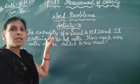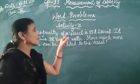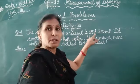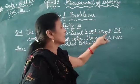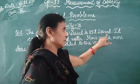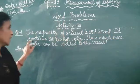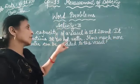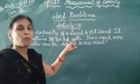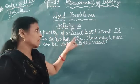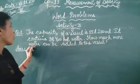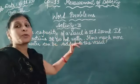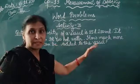The capacity of a vessel is 15 litre 200 millilitre. It contains 9 litre 600 millilitre water. How much more water can be added to the vessel?